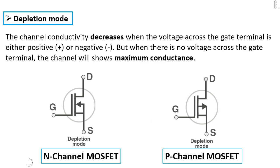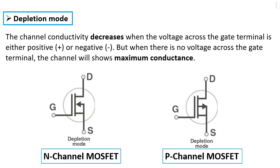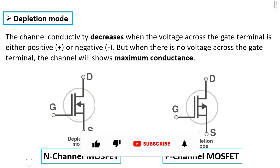The MOSFET contains three terminals: drain, gate, and source. For the n-channel MOSFET, the arrow is toward the gate — from source to gate. But for the p-channel MOSFET, the arrow is from gate to source. You can differentiate between n-channel and p-channel MOSFETs using this arrow direction.